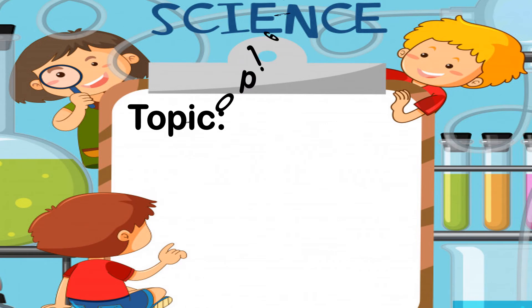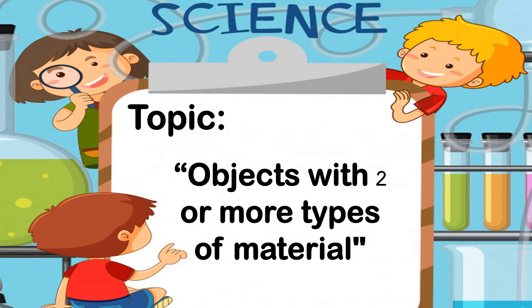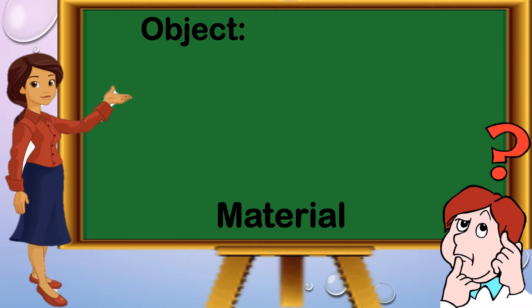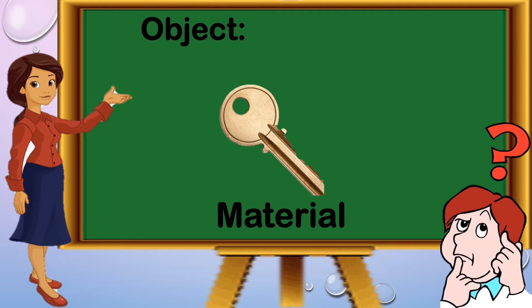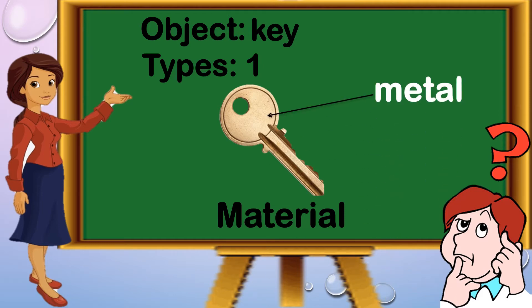Our topic for today is all about objects with two or more types of materials. First, what do you think is the name of this object? This object is a key. How many types of material is this key made up of? We have only one type of material — it is made up of metal.